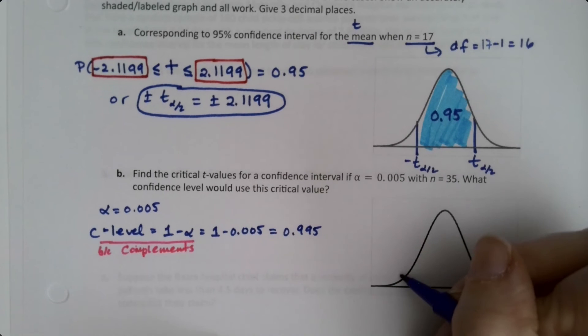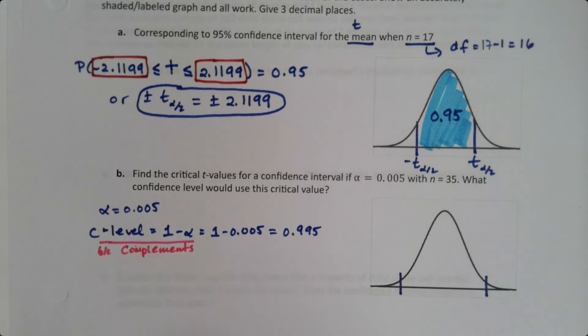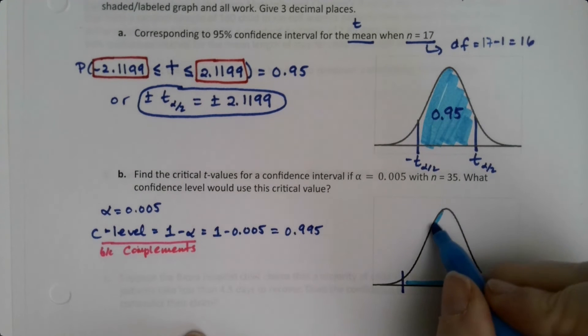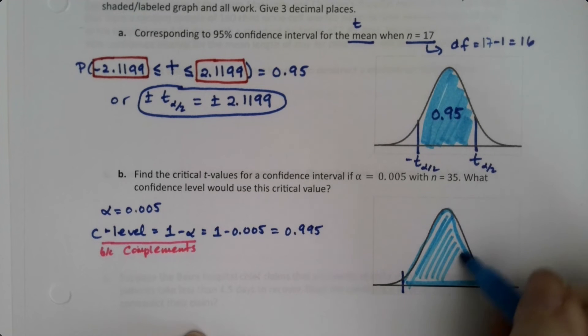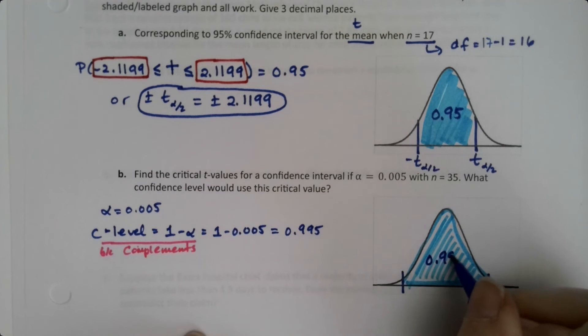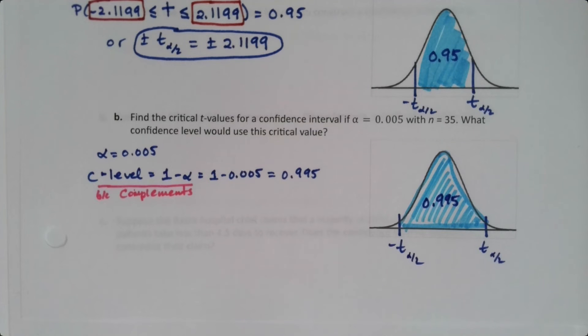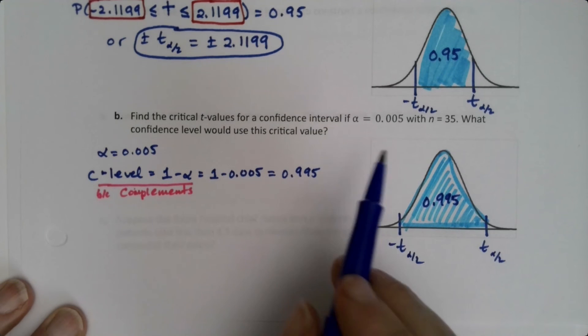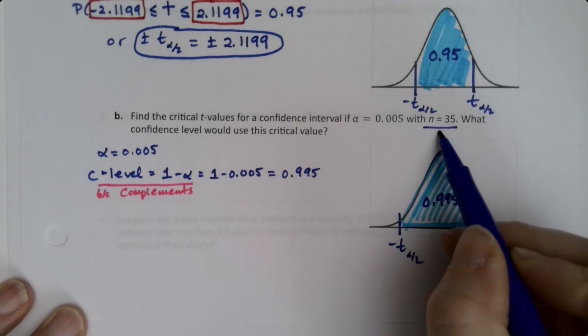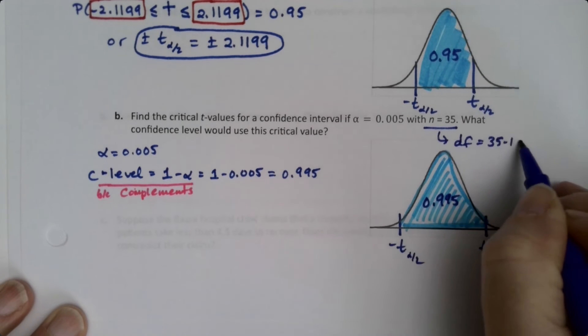Alright, so that means that I want to shade quite a bit more of this picture. Because I want to shade 0.995, so I'm going to make the central portion a little bit larger than I did on the one above. And then this is 0.995. This is negative T and positive T. We can put the little subscripts there, but they're there. Okay, so the only other thing I need is my degrees of freedom. So you can see that n is equal to 35, so that means degrees of freedom is 35 take away 1, which is 34.